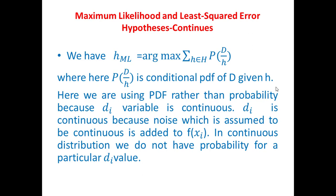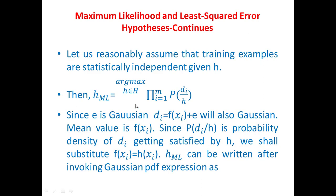So we have to go for a probability density function, which is nothing but probability per unit. Let us reasonably assume that training examples are statistically independent given h. In such a case, the summation can change to multiplication — that is, P(D|h) can be written as the product of individual P(di|h), which is a necessary condition for statistical independence. So hml = argmax over h in H of the product from i=1 to m of P(di|h).